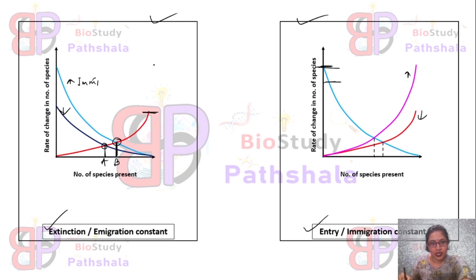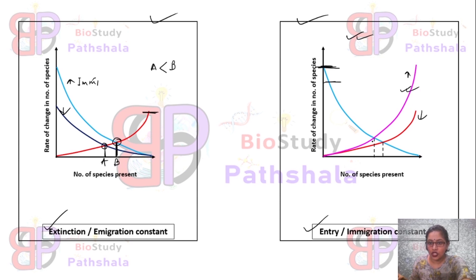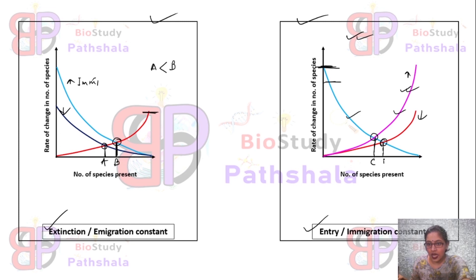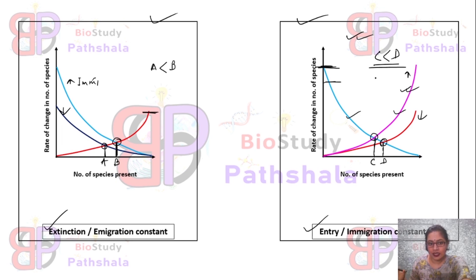If we name the first intersection point A and the second point B, then A will be less than B. In the second graph, the entry value intersects with the higher exit value at point C, and the entry value intersects with the lower exit value at point D. Here, C will be less than D. This is how the extinction or exit rate and the immigration or entry rate produce these variable results.